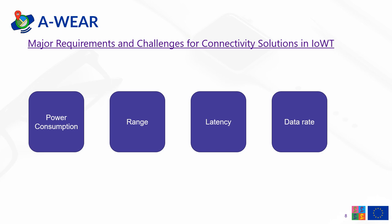Secondly, range of the device is also very important because a device has to communicate or connect to other devices around it. Third, latency, which defines the time a device takes to communicate with some other device around it. And finally, data rate, which is the amount of data communicated per second. So all these are some important requirements and challenges for any connectivity solution in the internet of wearable things.